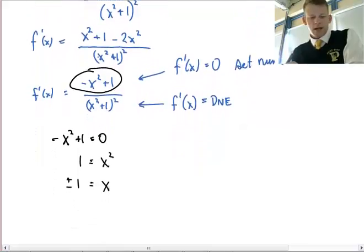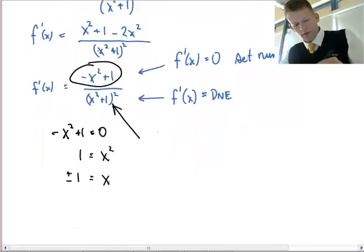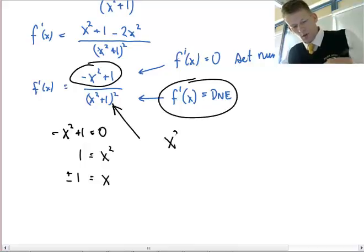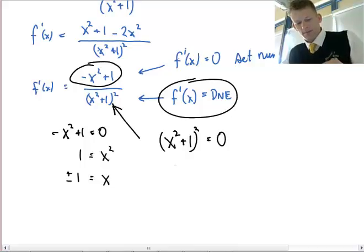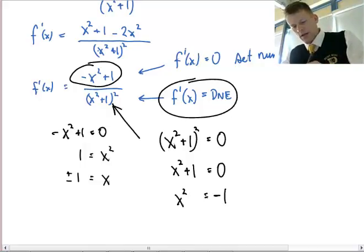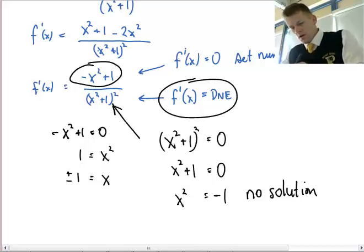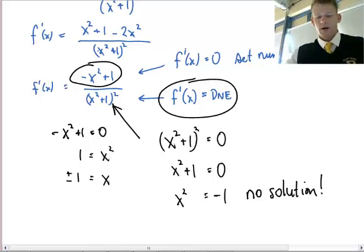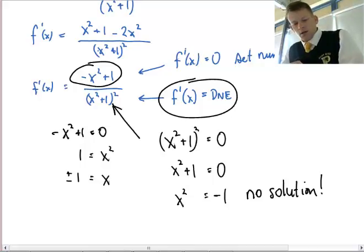If I try to set the bottom equal to 0 to find out where it doesn't exist, (x² + 1)² = 0, basically square root both sides to get x² + 1 = 0, then x² = -1, and this has no solution. There's no number you could square in the real number system and get a negative. In our calculus we're working with all real numbers based, so we're not looking for imaginary roots.